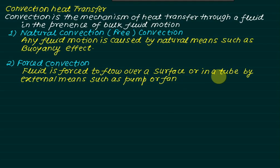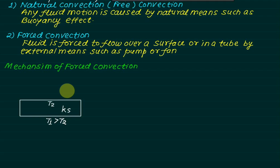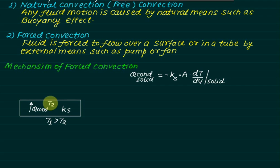When the fluid passes through a tube, it is called internal flow, and when it passes over a surface, it is called external flow. To understand the mechanism of forced convection, consider a hot plate where temperature T1 is greater than T2, and the material has thermal conductivity Ks. Heat is transferred from high to low temperature according to Fourier's law, and Q conduction through the solid is given by Q = -K_solid × A × dT/dy, where dT/dy is the temperature gradient through the solid.